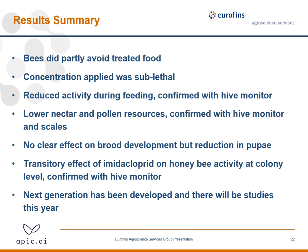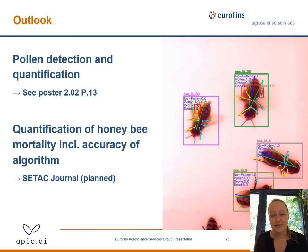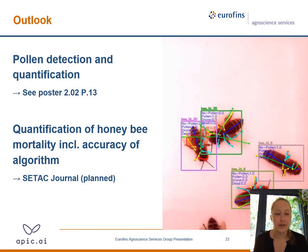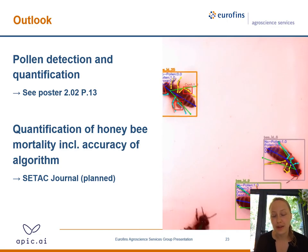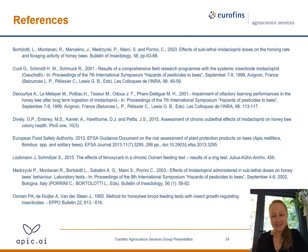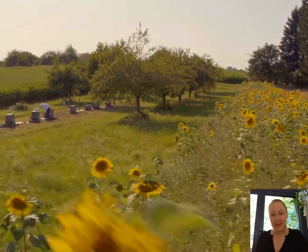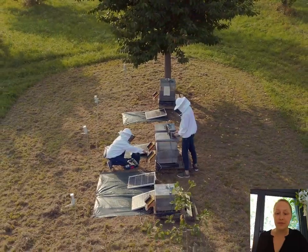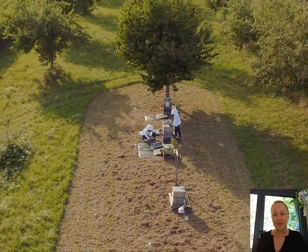APIC has now developed a new generation of the hive monitor, and this year there will be more studies. We draw your attention to the poster on pollen recognition. We are also currently looking into the quantification of honeybee mortality, including the accuracy of our algorithm, and are planning to publish in the SETAC journal. Please check out our poster on pollen detection and quantification at poster 202 P13. If you have any questions about our study design or research methods, please don't hesitate to contact us — you can find both Silvio's and my email addresses in the first slide. Thank you for your interest.